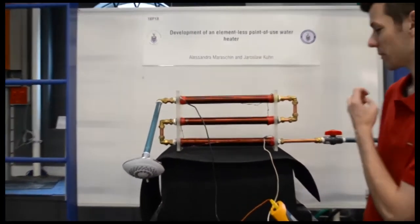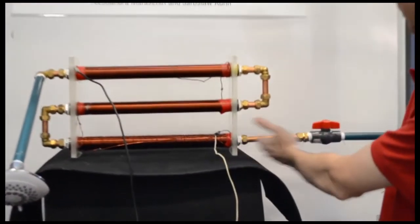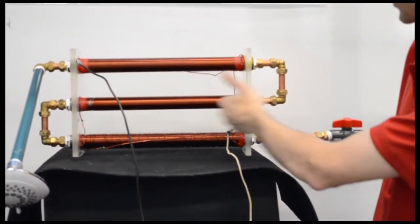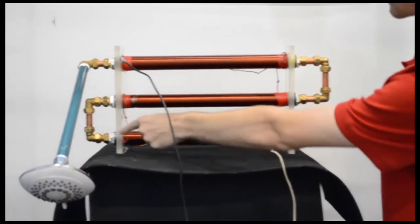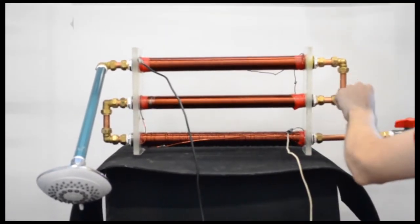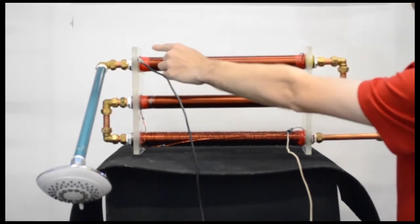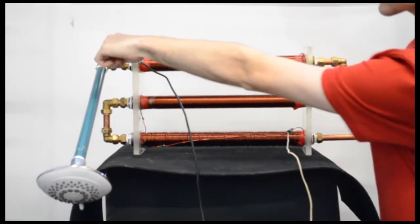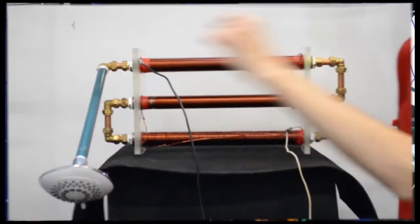Our system: Water enters the system here. This ball valve controls the flow rate. Water flows through this element here, up that way, through this element here, up that way, and through this element here. These are three induction heating points. Hot water can finally exit the system here and out through the shower.